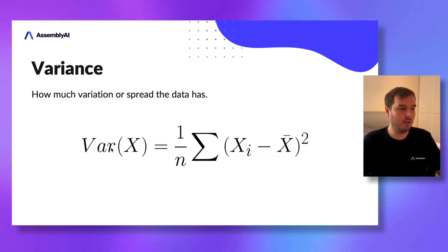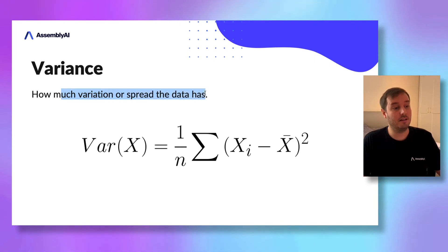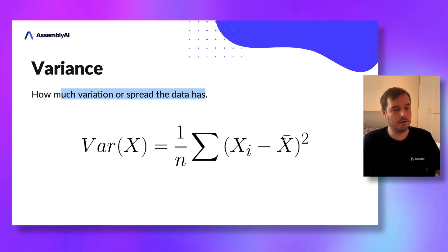For this, we need some math. We need to find the variance, which is how much variation or spread the data has. The formula is Var(X) = 1/n times the sum of (Xi - X̄)², where X̄ is the mean value.